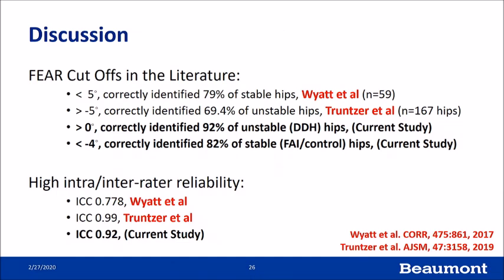Compared to prior publications: in Martin Beck's publication, less than minus five degrees correctly identified about 80% of stable hips; in Mark Safran's publication, greater than negative five degrees correctly identified about 70% of unstable hips. In this analysis, greater than zero degrees correctly identifies 92% of unstable hips, and less than minus four degrees correctly identifies 82% of stable hips, with similar inter- and intra-rater reliability to the two prior studies.